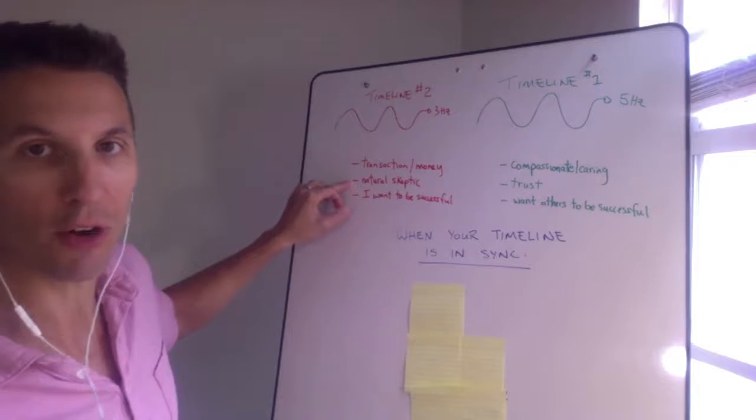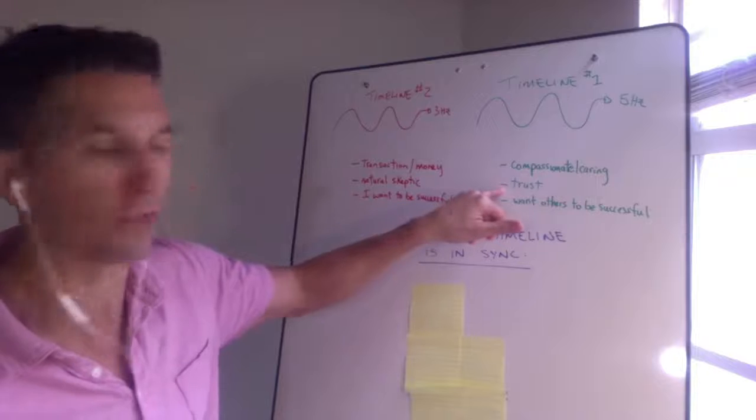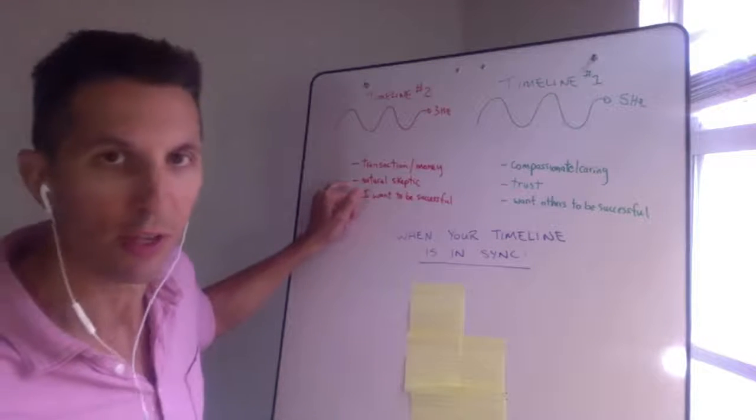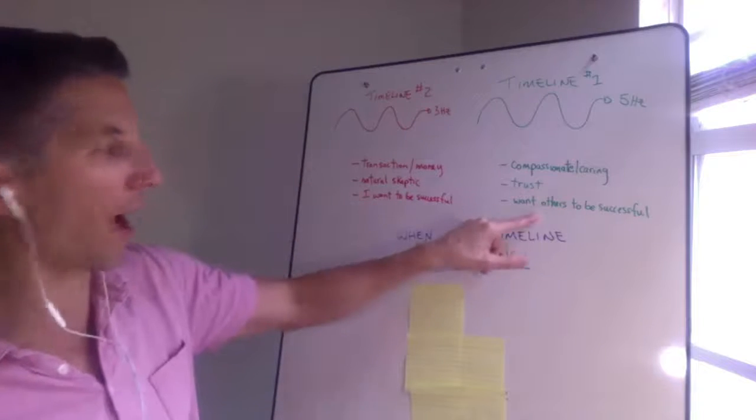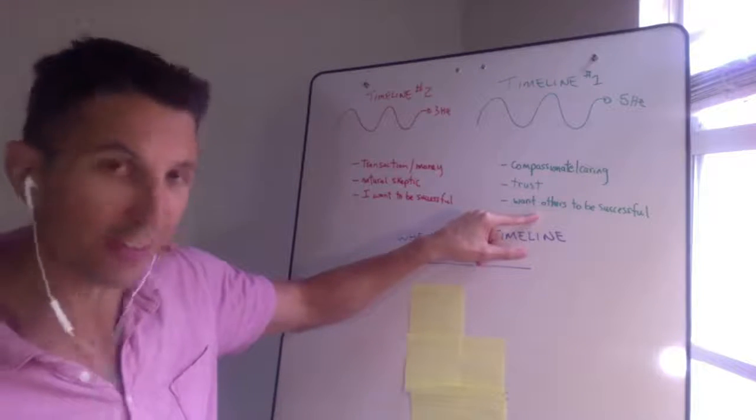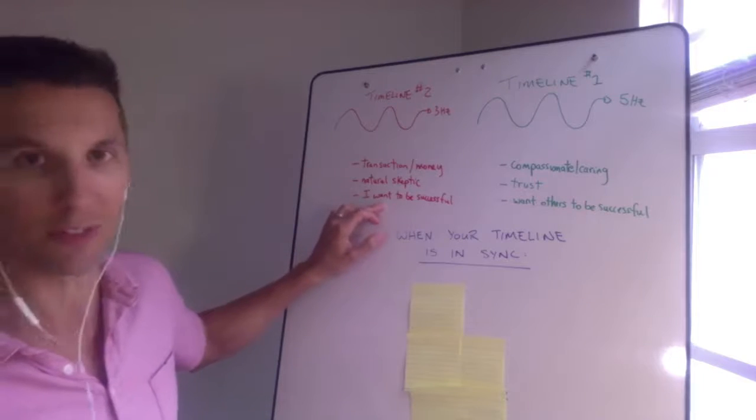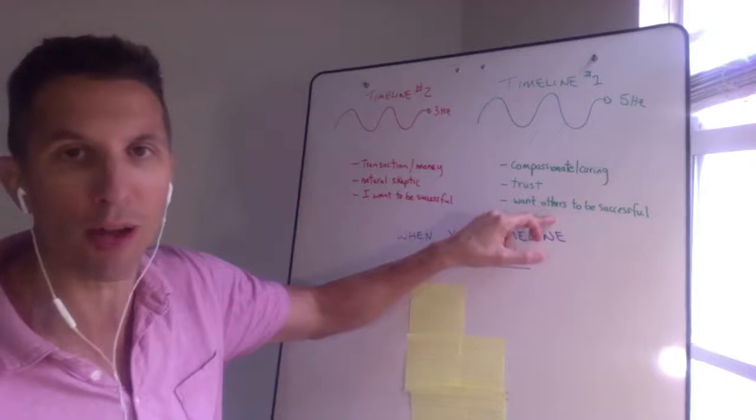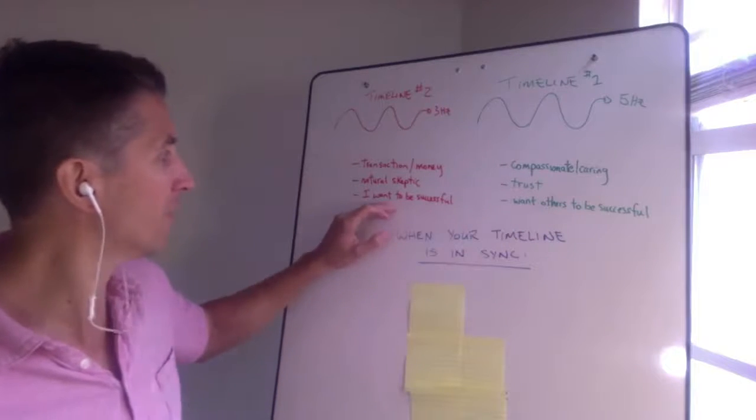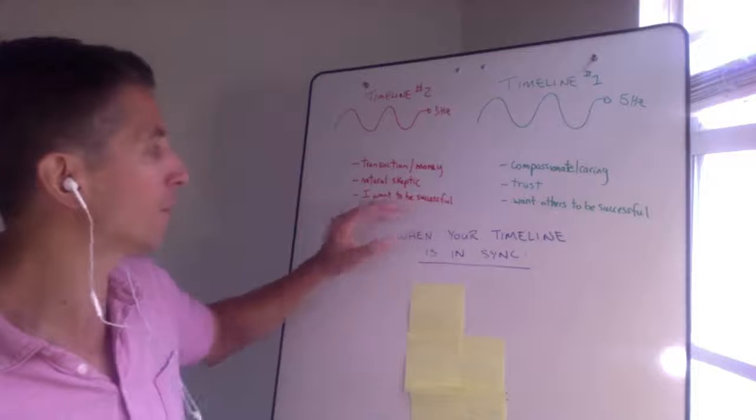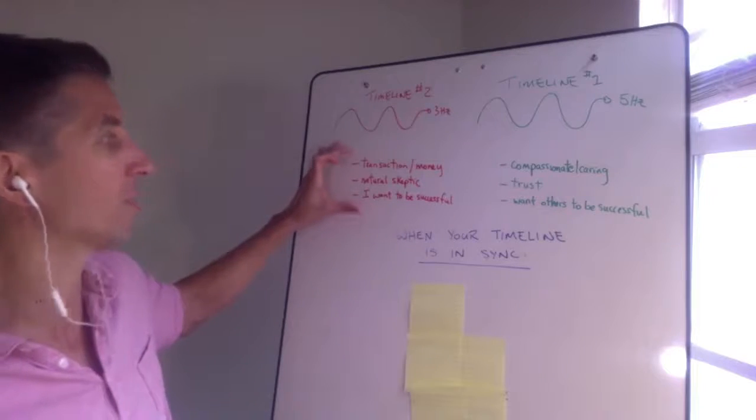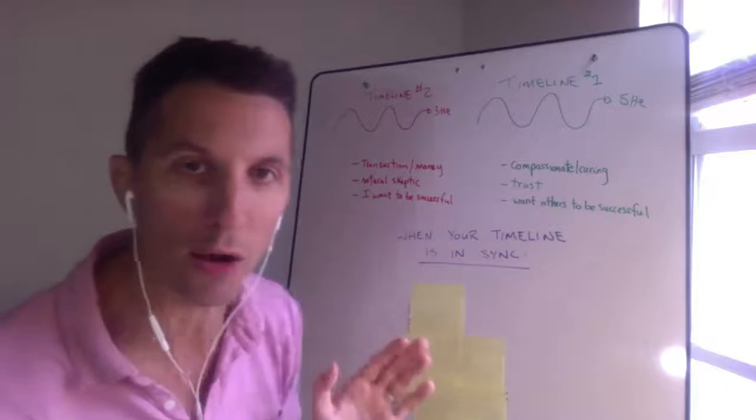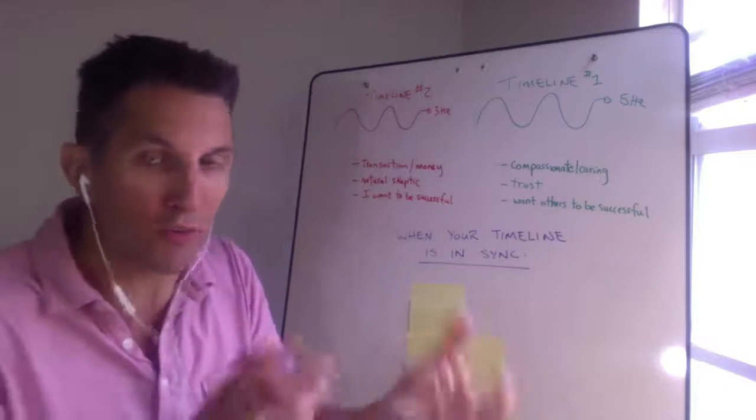Number two is these people generally are natural skeptics. They're like the opposite of me. So instead of being trusting intrinsically, they naturally don't trust intrinsically. And the last thing is I want others to be successful. In this case, the other opposite frequency, I want to be successful, it's about me building this massive business, being successful, versus I want others to be successful. I'm not saying he doesn't want others to be successful, I'm just saying as a priority it seems to be these are at the top of his list versus this.